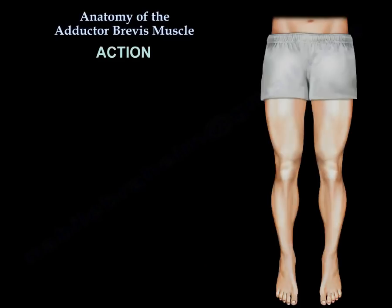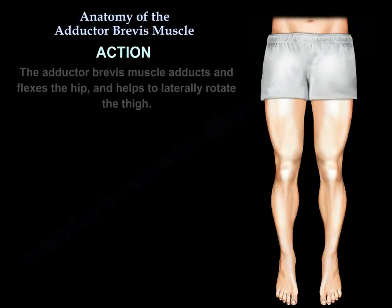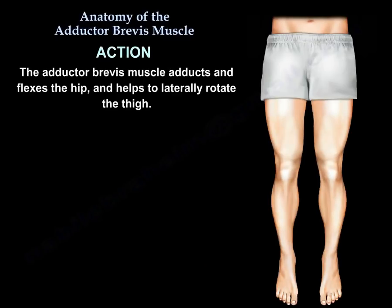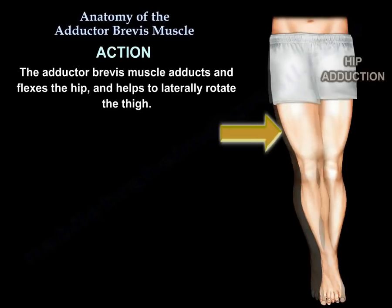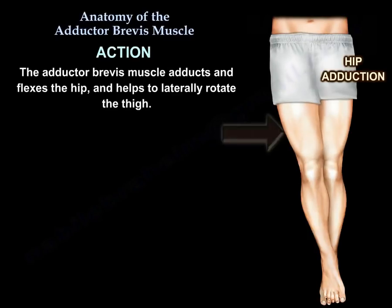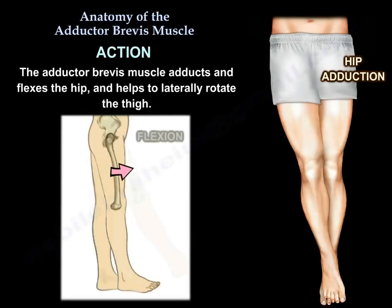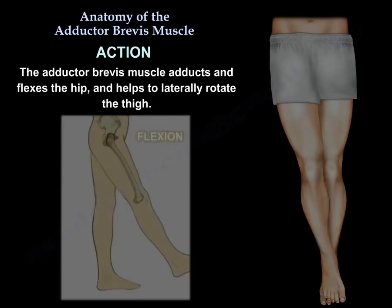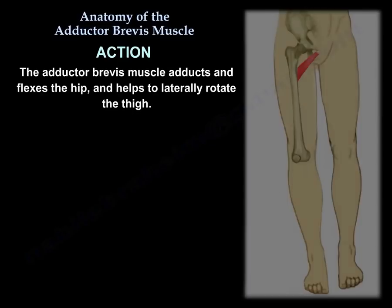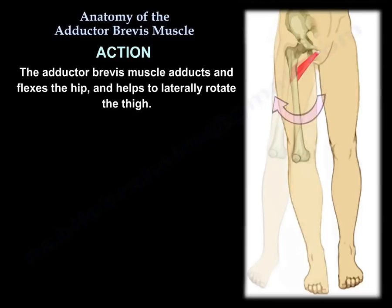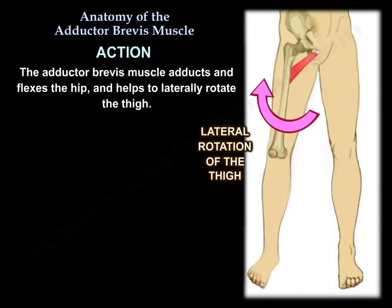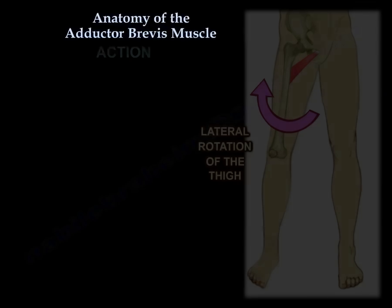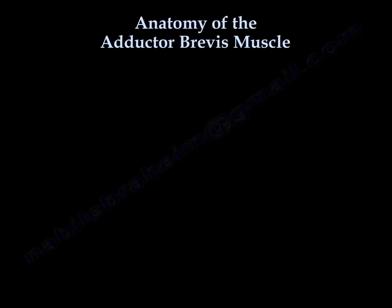Action. The adductor brevis adducts and flexes the hip, and helps to laterally rotate the thigh. Thank you very much, I hope that was helpful.